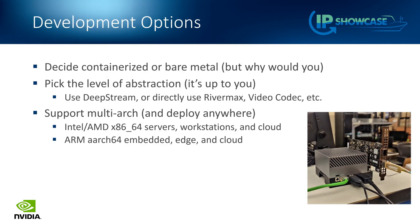This plugin can run wherever DeepStream can run — on the edge on a Jetson, on a workstation, or in the cloud in a Kubernetes cluster. It's multi-arch, running on x86 or ARM processors. We will open source this library and serve it as an application so you can experiment with the technology. You can always decide whether to use DeepStream for certain elements or use RiverMax or the video quality SDK directly if you need more control.